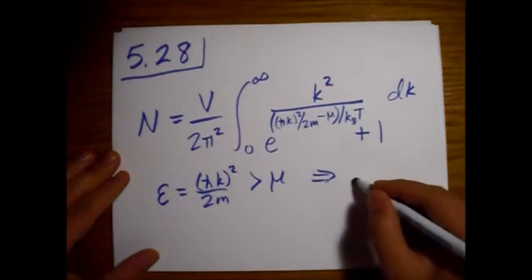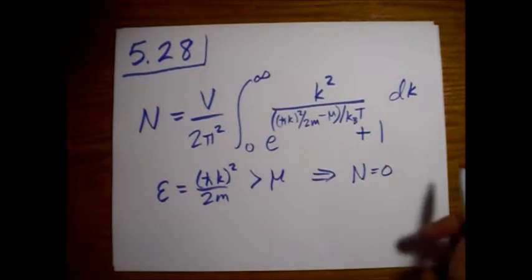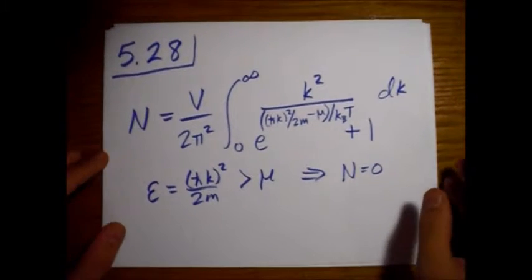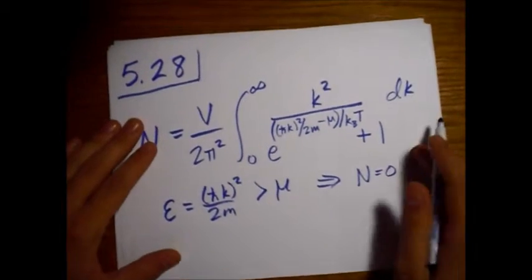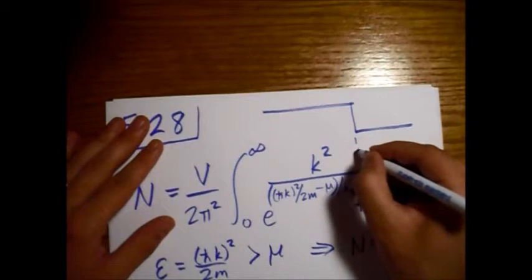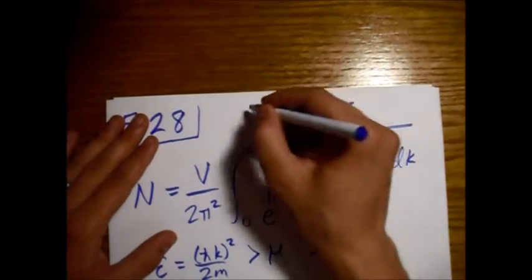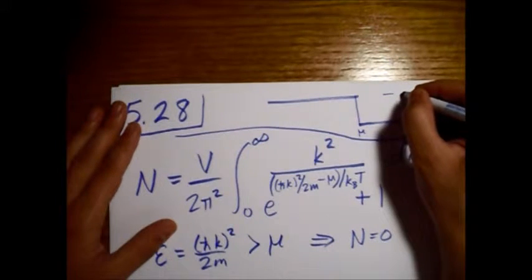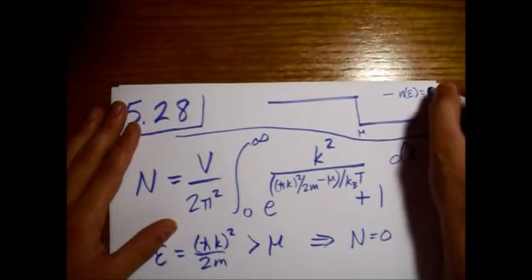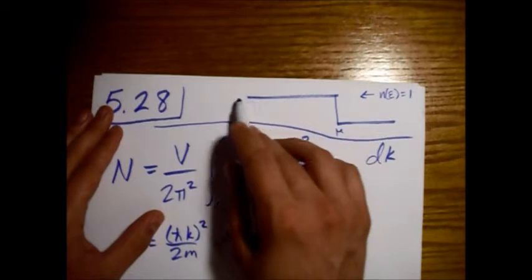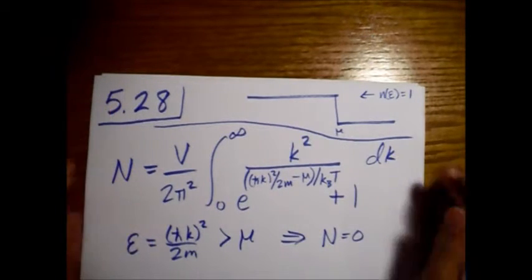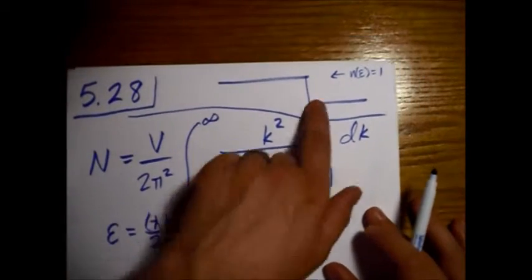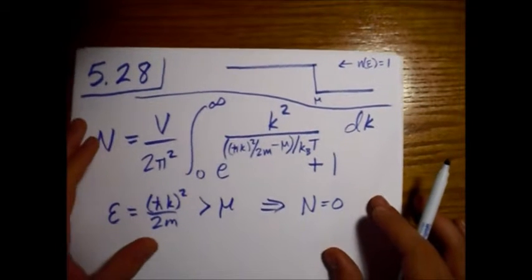So, for an epsilon greater than the chemical potential, this exponent here will blow up and the denominator here will go to infinity, leading to everything here going to zero. So this gives us this integral going to zero. Basically there are no fermions, so absolute zero. Remember, we have a sharp cutoff at the chemical potential.